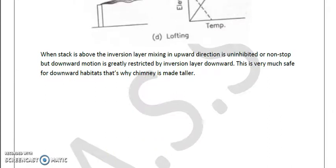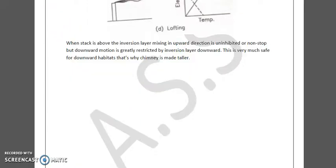And above the inversion layer if they are there, you can see that upward the pollution can move, but downward will not move because the inversion layer is formed below the stack.